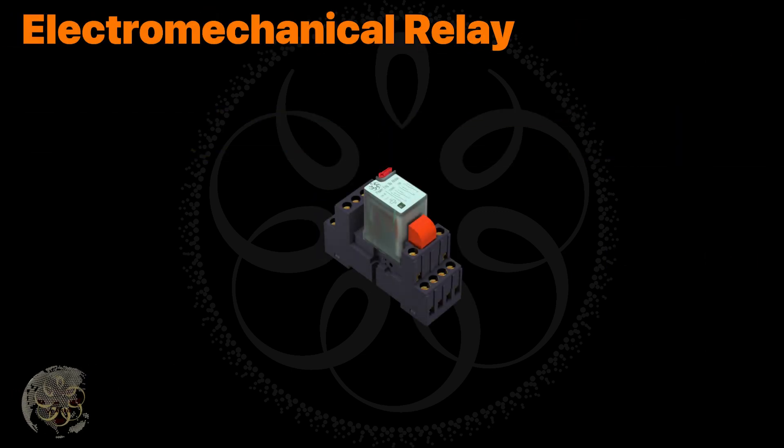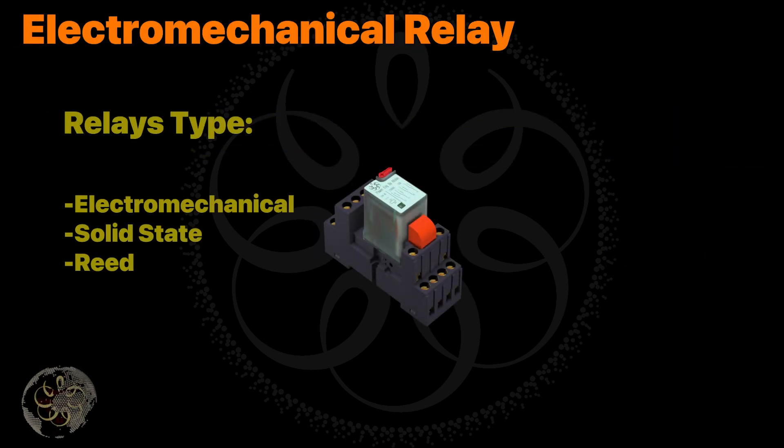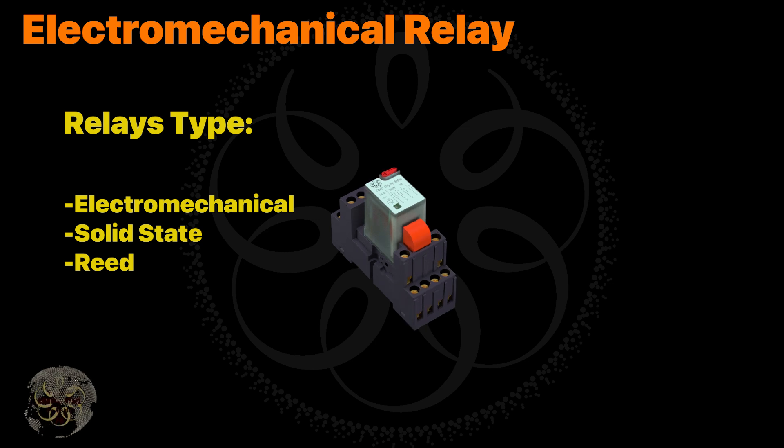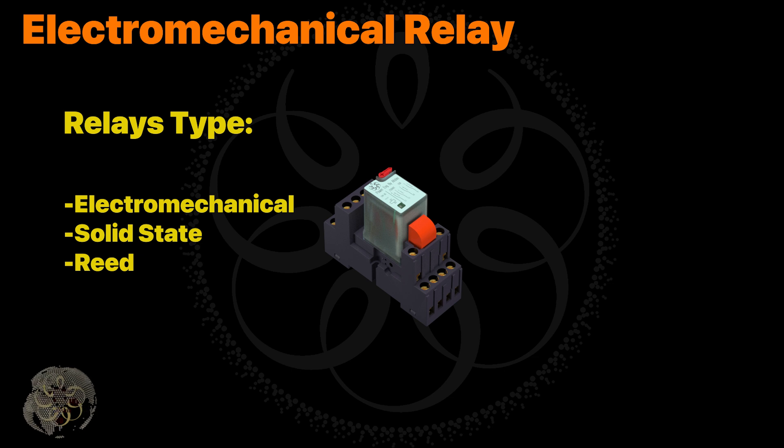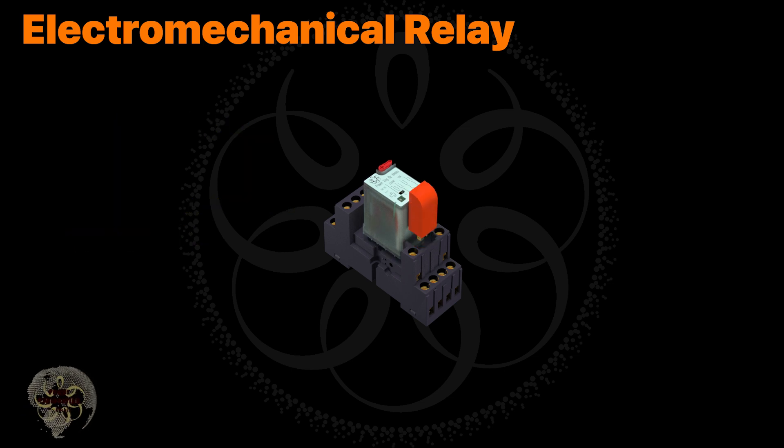Next, let's discuss relays. A relay is a simple switch. Relays come in different types, such as electromechanical and solid state, with the electromechanical relays being commonly used. Industrial relays usually come with a base, which provides access to the relay's terminals.